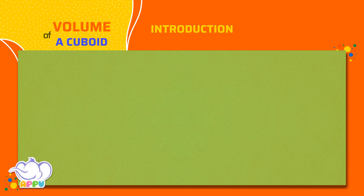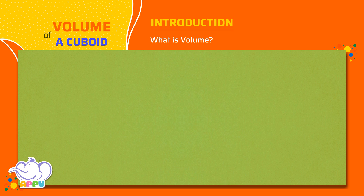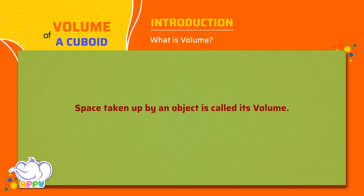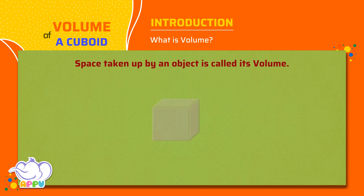Introduction: Volume of a cuboid. What is a volume? Space taken up by an object is called its volume. To find the volume, we find the number of unit cubes that fit in an object. A unit cube is a cube having one unit as edge length.